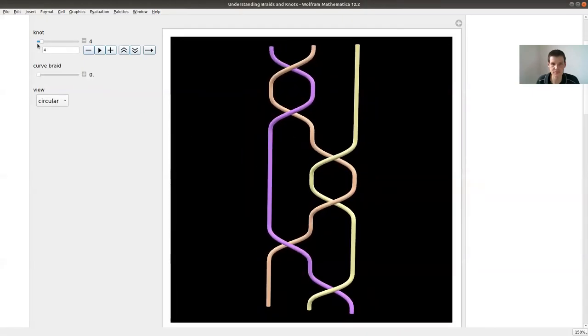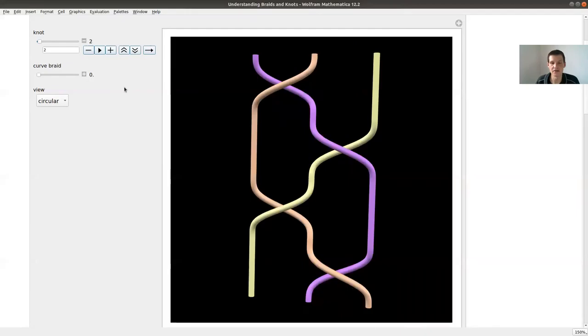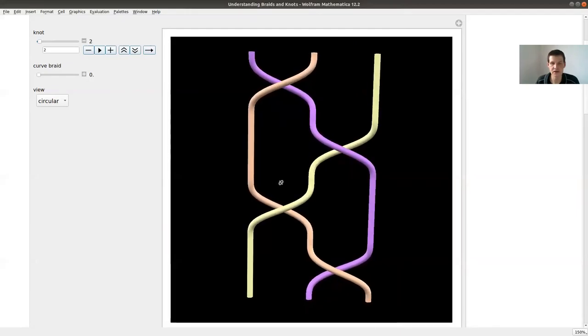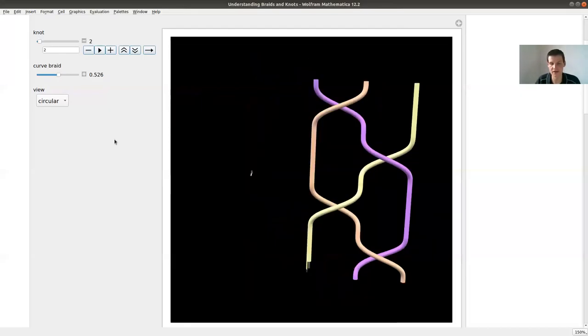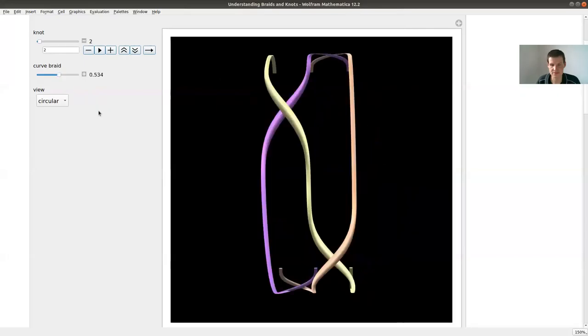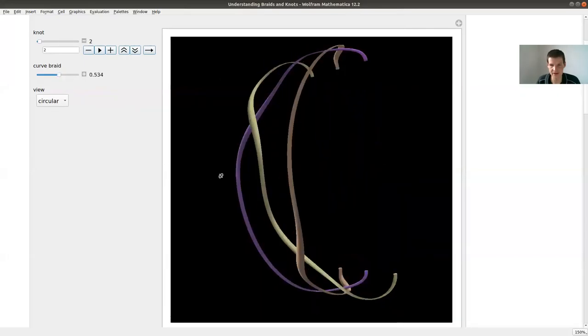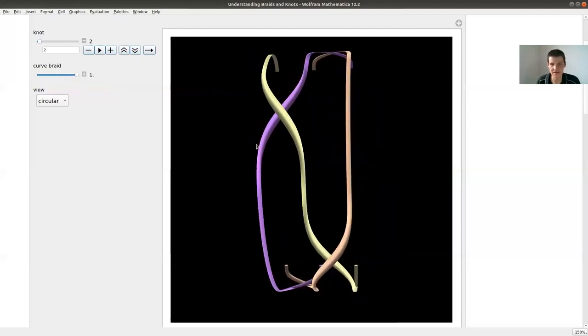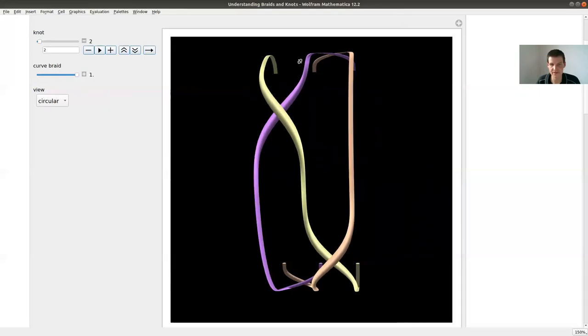And the two major statements now which say, oh yeah, we get a purely algebraic way to study knots and links are the so-called Alexander theorem linked in the description and the so-called Markov theorem in the description. And basically what they say is the following. The Alexander theorem says this procedure is a good procedure in the sense that every knot and every link arises as a closure of a braid, which is not an obvious question. This is really an honest theorem. It's not obvious that everything arises in this way, but actually everything does. So that's already a very nice thing. Good to know.